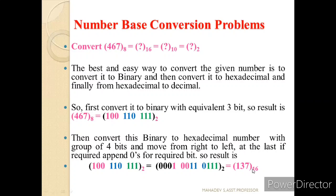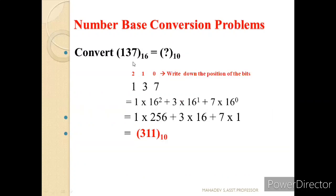Now let us convert this hexadecimal number 137 to decimal. The conversion is the same as previously explained: we write the positional values — 7 is at position 0, 3 is at position 1, and 1 is at position 2. So: 1×16² + 3×16¹ + 7×16⁰. Multiplying and adding gives a final value of 311 base 10.